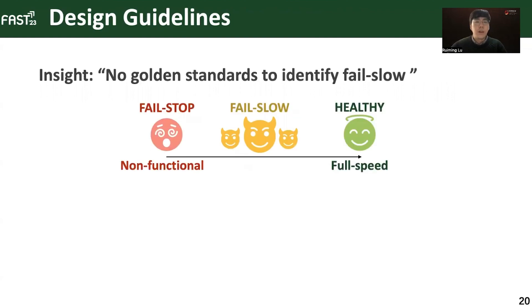So, unlike fail-stop failures, there are no clear criteria for detecting fail-slow drives. Instead of relying on the framework to output binary results, the detection tool should describe the likelihood of a drive to be fail-slow. With sufficient accuracy, on-site engineers can then focus on the most severe ones. While this may still leave some fail-slow drives undiscovered, it is acceptable as they behave like normal performance variations.